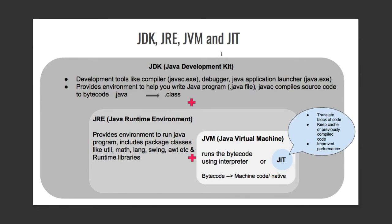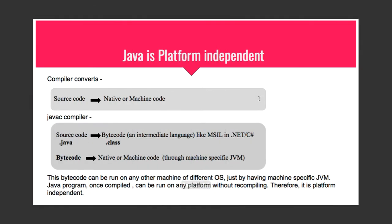Now let's move on to how Java is platform independent. Normally, a compiler converts source code into native or machine code, which is platform dependent — it is specific to the platform on which it was compiled and will not run on any other platform. But in Java, the JavaC compiler converts your source code into bytecode, which is an intermediate language, just like Microsoft Intermediate Language in .NET.